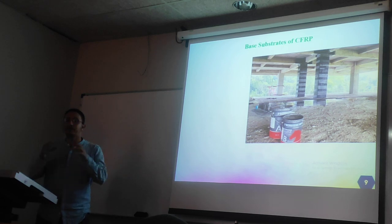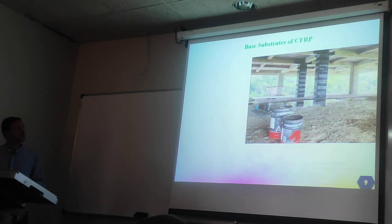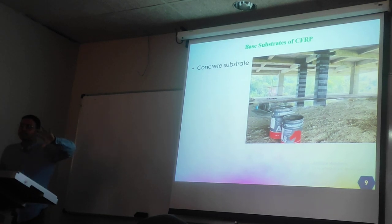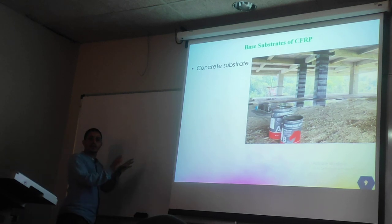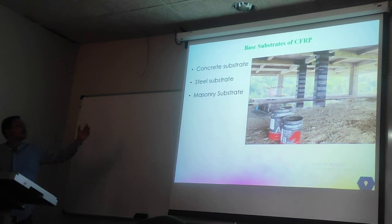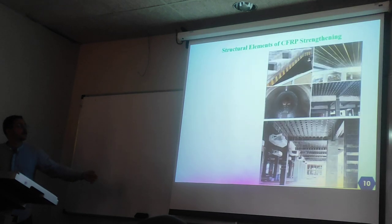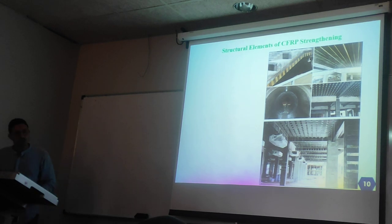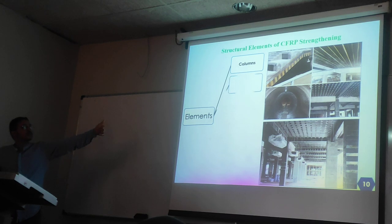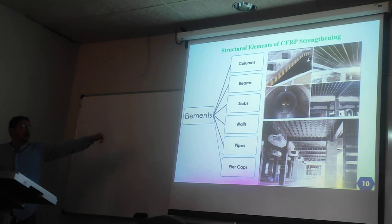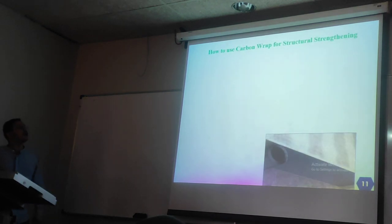Now let's go to the practical side: the application and how we use CFRP. The base substrate is the surface that we put the CFRP on. Substrate types include concrete substrate, steel substrate, masonry substrate, and timber substrate. The structural elements we use CFRP for strengthening include columns, beams, slabs, walls, pipes, and pier caps.